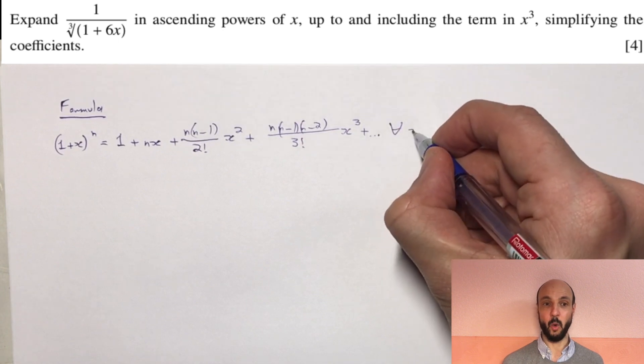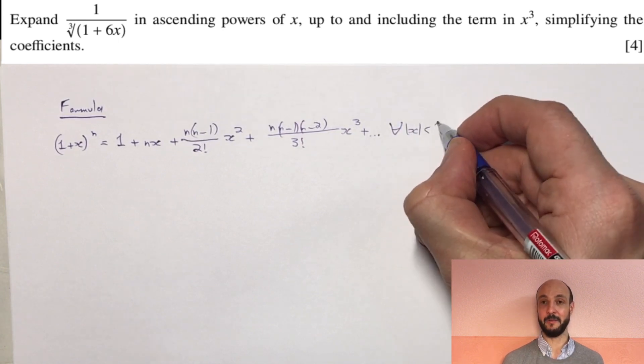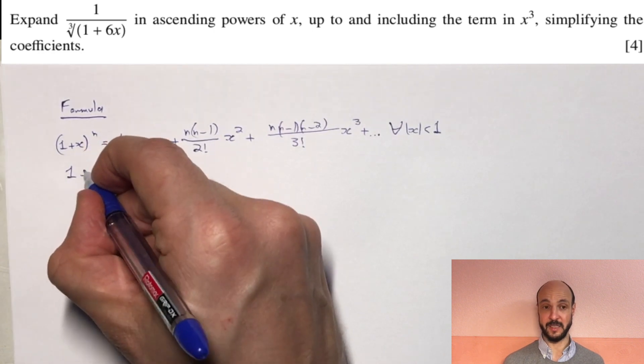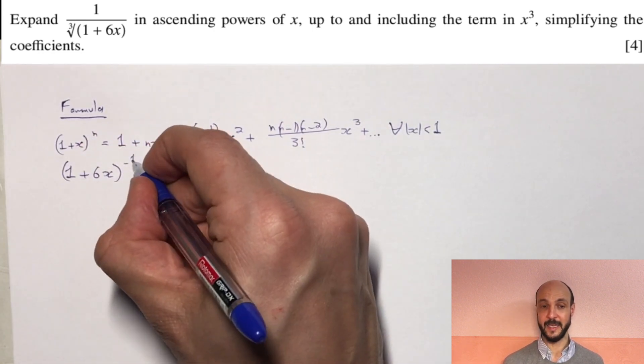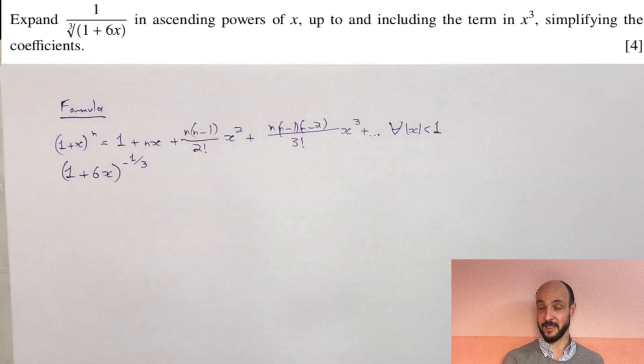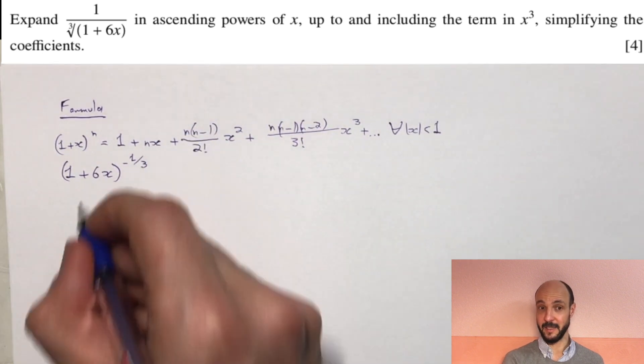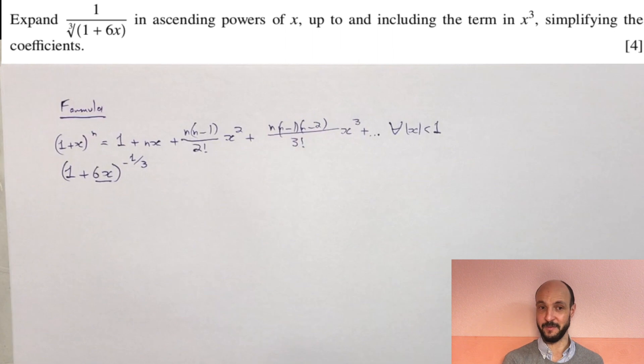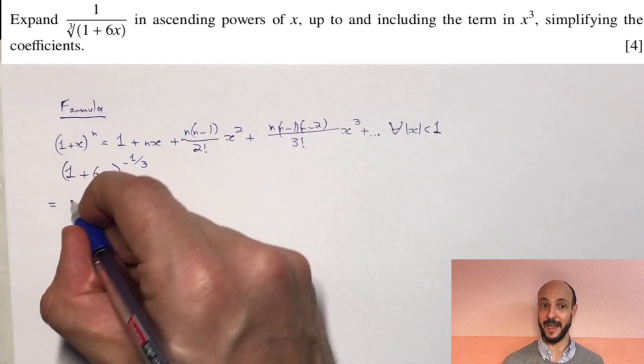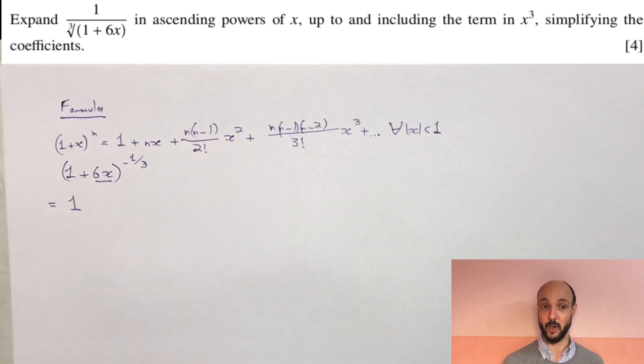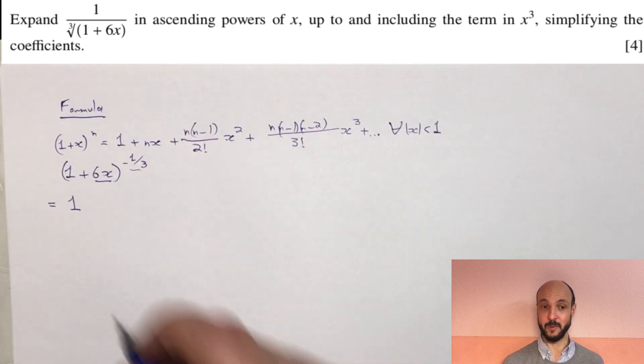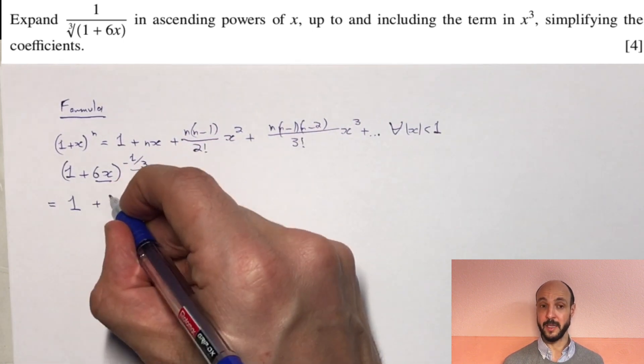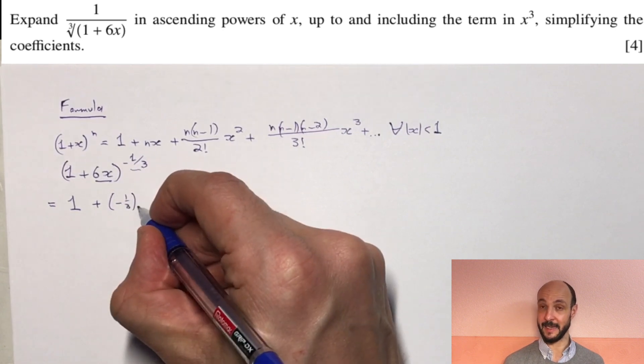So we've got 1 plus 6x to the power of minus 1 third. We don't need to alter this in any way because it's got a 1 there as we've got in the formula. Our 6x is going to be what is called our x in the formula. So everywhere we see x in the formula we're going to use 6x, and our n is going to be this minus 1 over 3. So therefore applying the formula we get this equal to 1 plus minus 1 third times by 6x,